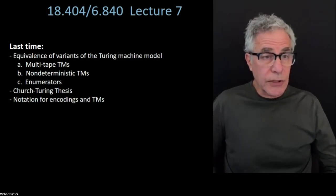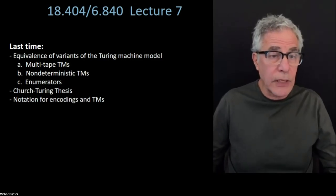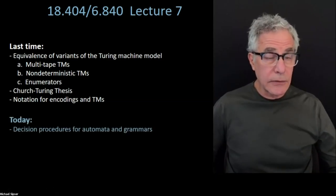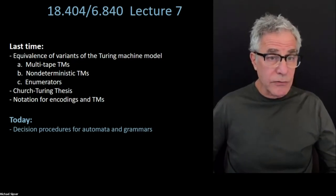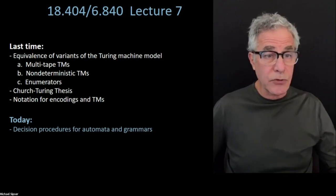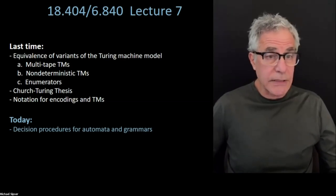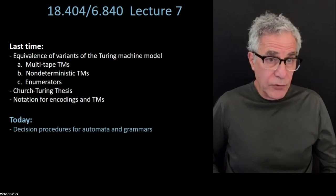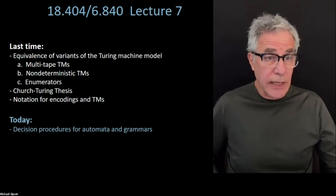This led to the Church-Turing thesis, that all of these models each capture our intuitive idea of what we mean by a procedure or an algorithm, for addressing mathematical problems and precise problems of that kind. We talked about the Church-Turing thesis and a notation for encodings and Turing machines. Today we're going to give a bunch of examples of Turing machine algorithms for solving a variety of different problems.